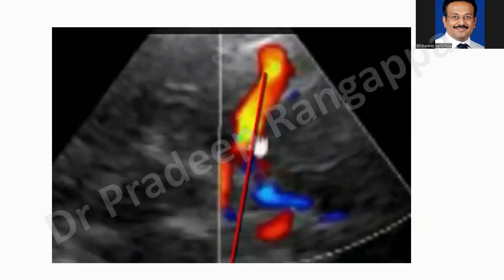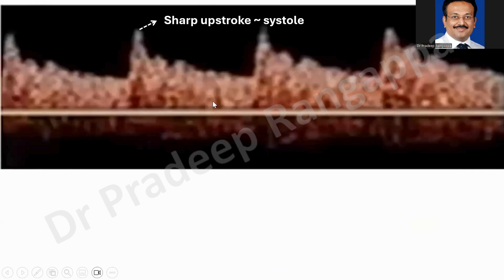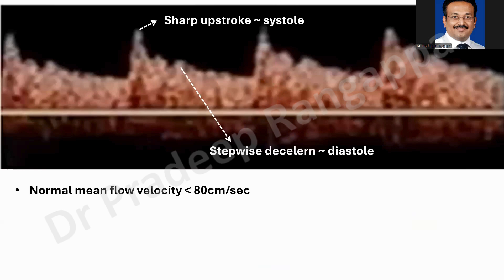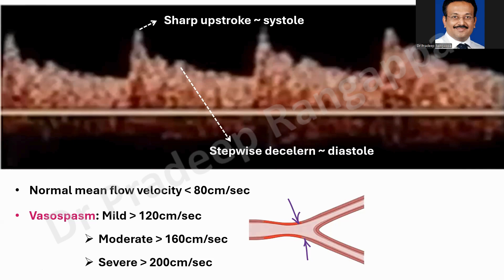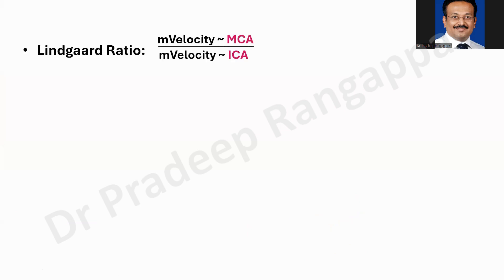Once you identify the MCA lateral to the sphenoid wing, place the cursor and apply the Doppler. You will get a waveform with a sharp upstroke which is the systolic wave, and then a decelerating downstroke which is the diastolic wave. The normal MCA flow velocity should be less than 80 centimeters per second. For vasospasm: mild vasospasm is velocity more than 120 cm/s, moderate is more than 160 cm/s, and severe is more than 200 cm/s.